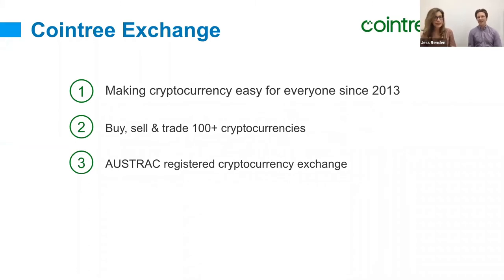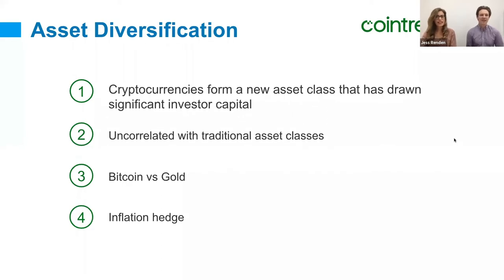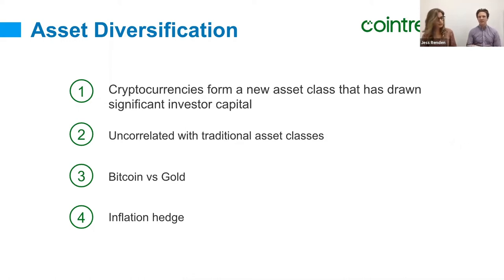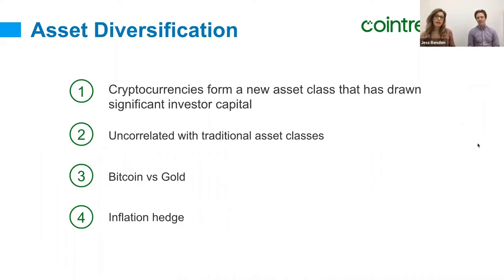Let's move on to talking about asset diversification and Bitcoin. Cryptocurrency is a new asset class currently drawing significant investor capital. We're going to quickly compare Bitcoin against traditional asset classes such as fiat currency — like Australian dollars — and also gold, and then look at its adoption over the last 10 years and why it might be of interest to you and your clients.